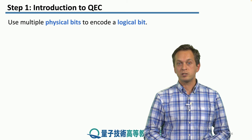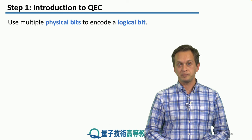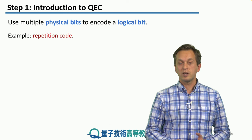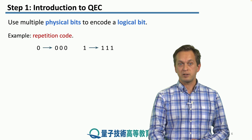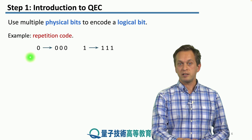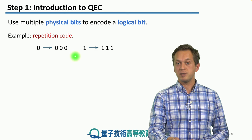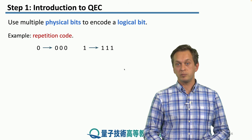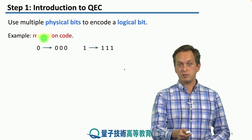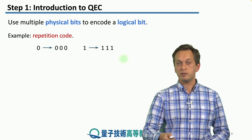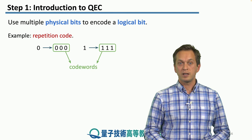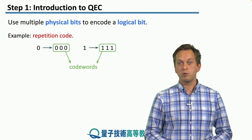What Alice can do is use multiple physical bits to encode a logical bit. This is known as repetition code. Rather than sending a physical bit one, she sends three bits representing one logical bit. If she wants to send a zero, she sends three zeros. If she wants to send a one, she sends three ones.